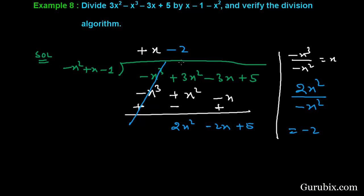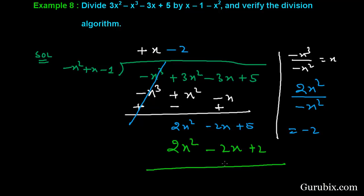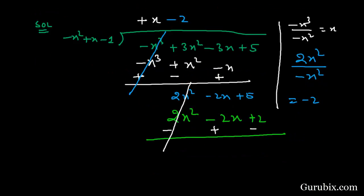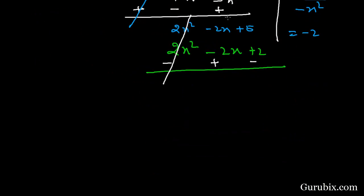Now we multiply all the terms of the divisor by minus 2, giving 2x squared, minus 2x, and positive 2. We change the sign of these values and cancel out. This value will also cancel out, so here we have a remainder of positive 3.